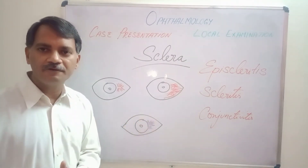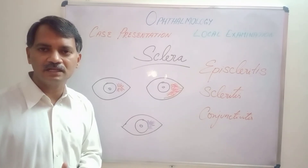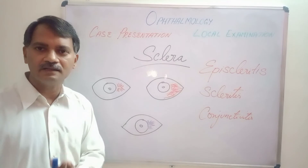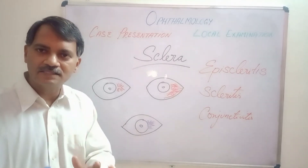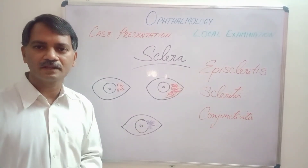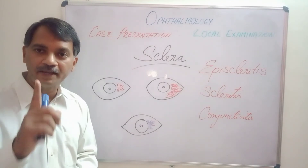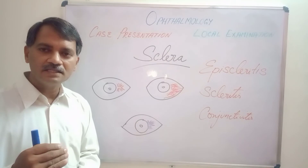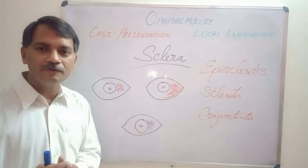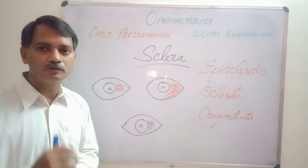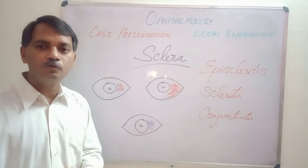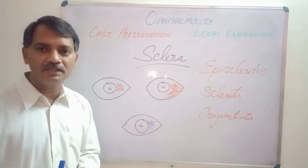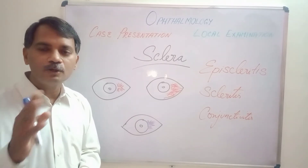Other points to differentiate between episcleritis and scleritis: in episcleritis, the symptoms will be very mild, the pain will be very less, and it will not be tender. But scleritis is very painful. Also, the inflammation of the sclera is continuous with the inflammation of the uveal tissue, so associated uveitis will be present, and the patient may also present with defective vision.